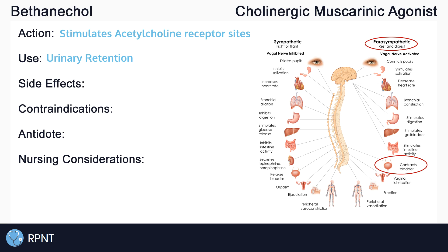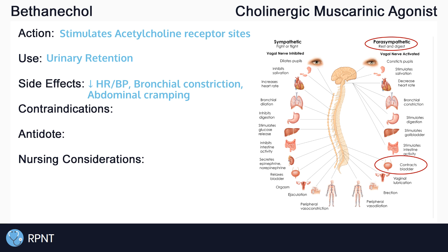To remember the side effects of bethanachol, it's important to remember how the drug works. Bethanachol stimulates the rest and digest nervous system and will affect other systems, not just the urinary system. Other rest and digest effects that bethanachol might provide are a decrease in heart rate and blood pressure, bronchial constriction, abdominal cramping from diarrhea, and so on.